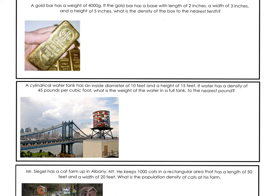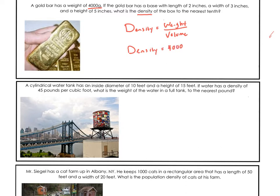A gold bar weighs 400 grams. The gold bar has a base length of 2 inches, a width of 3 inches, and a height of 5 inches. What is the density of the box to the nearest tenth? Well, since it says density, let's write: density is equal to weight over volume. Write this formula every single time. Now to figure out the density, we need the weight and the volume. Luckily, the weight was given — the total weight is 400 grams. So our density is going to be 400 over the volume, and now we need to figure out what the volume is.